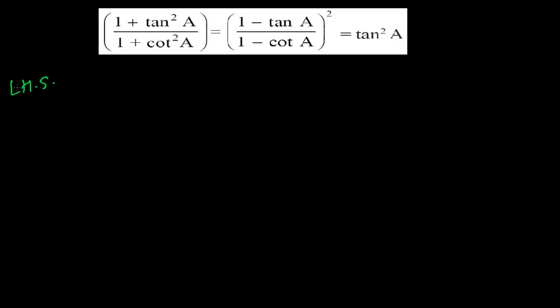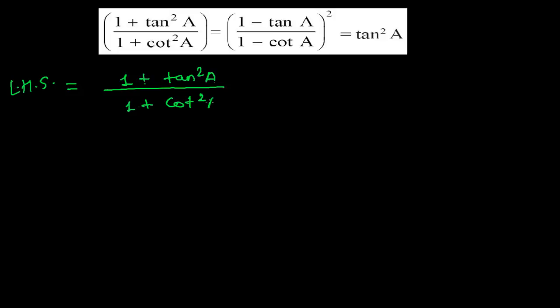I am starting with the left hand side. One by one I will solve and let's see whether we are getting equal or not. So our left hand side is 1 plus tan square a divided by 1 plus cot square a.